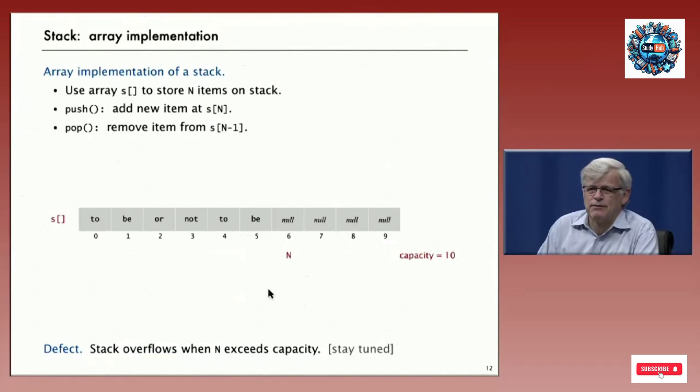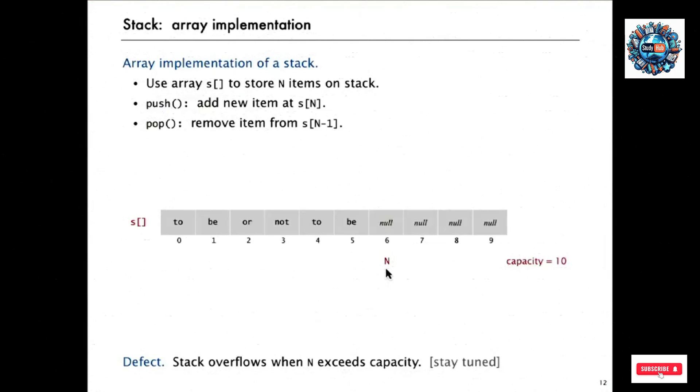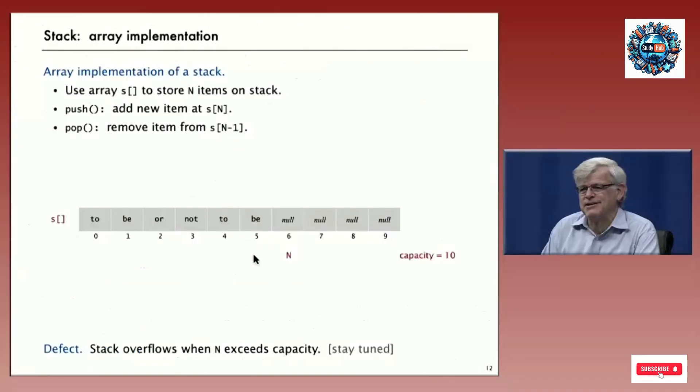To use an array, we just keep the N items on the stack in the array. The array location with index N is the place, the top of the stack where the next item is going to go. To push, we just add a new item at S[N]. And to pop, we remove the item that's at S[N-1] and decrement N. Now, there's a fundamental defect in using an array. That is that you have to declare the size of the array ahead of time. So the stack has a certain capacity. If there's more items on the stack than the capacity, we have to deal with that problem. That's a fundamental problem we have to deal with in array implementations in all sorts of algorithms and data structures. Considering it for this simple case will pay off later on.